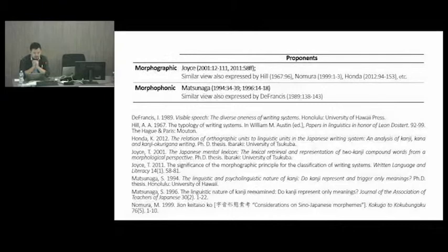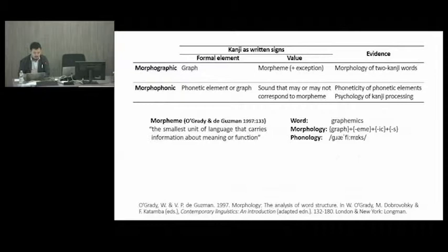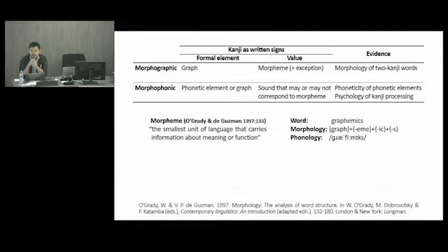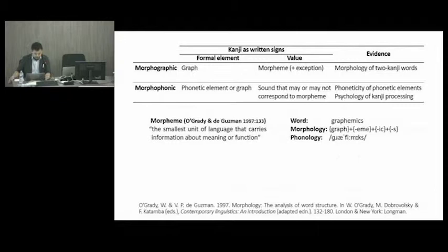Matsunaga's morphophonic theory is based on a study of Chinese presented by DeFrancis. These two theories have many differences, but the most striking differences are related to what constitutes the basic sign in kanji and what the values are, and they use different types of evidence. Before describing these differences, we need to check what we mean by morpheme, because this will be the key to the discussion. The textbook definition of the morpheme is that it is the smallest unit of language that carries information about meaning or function.